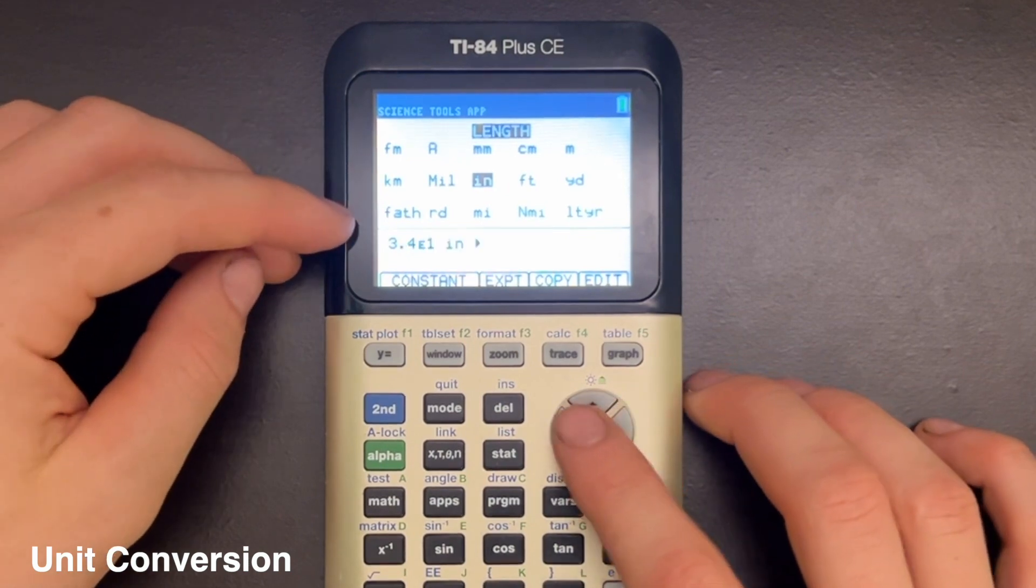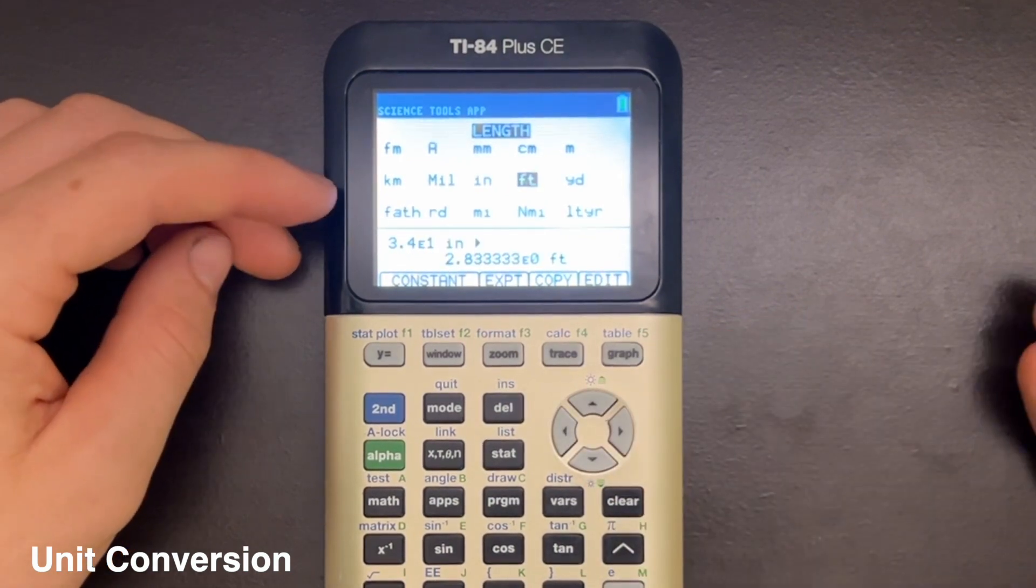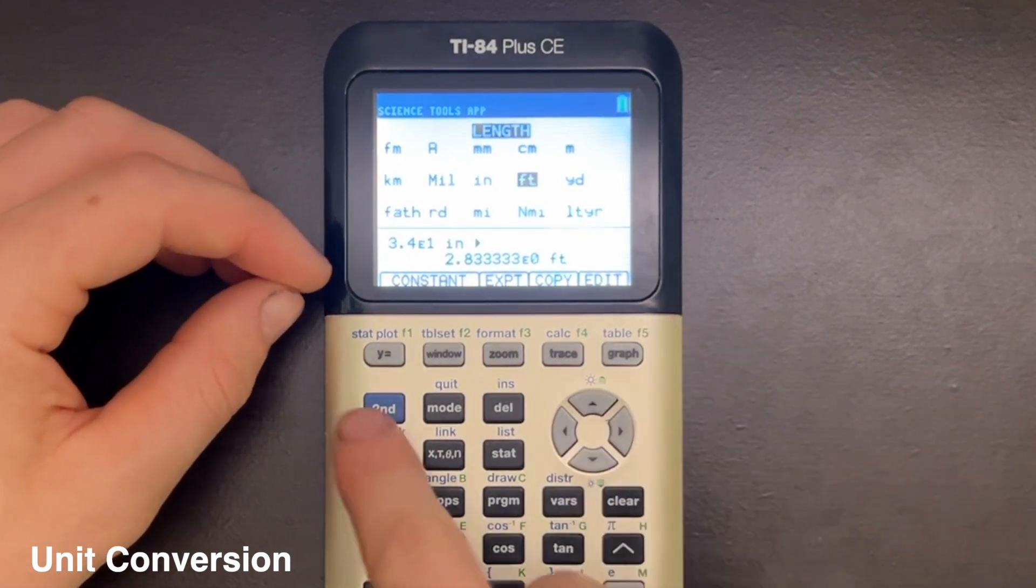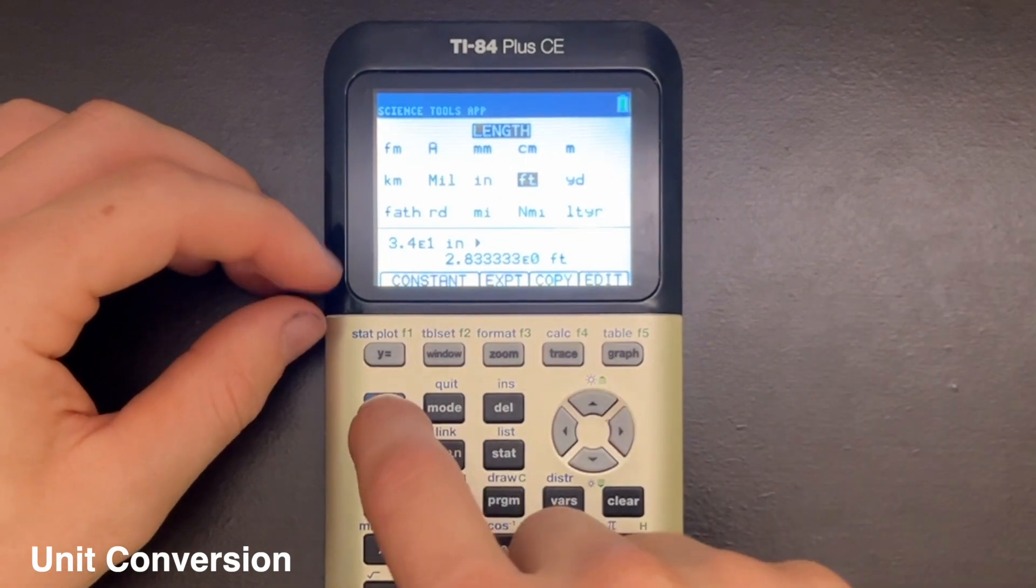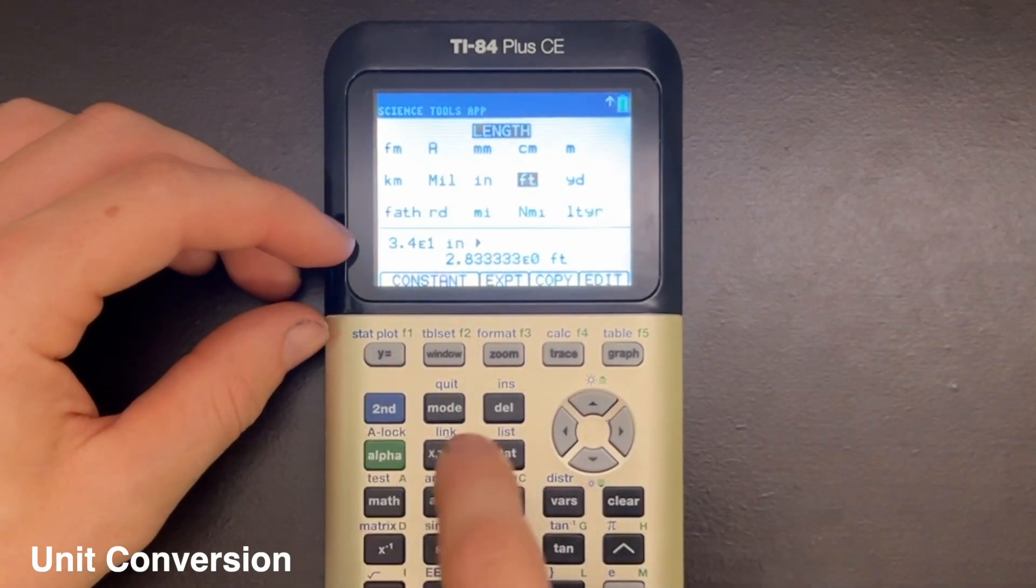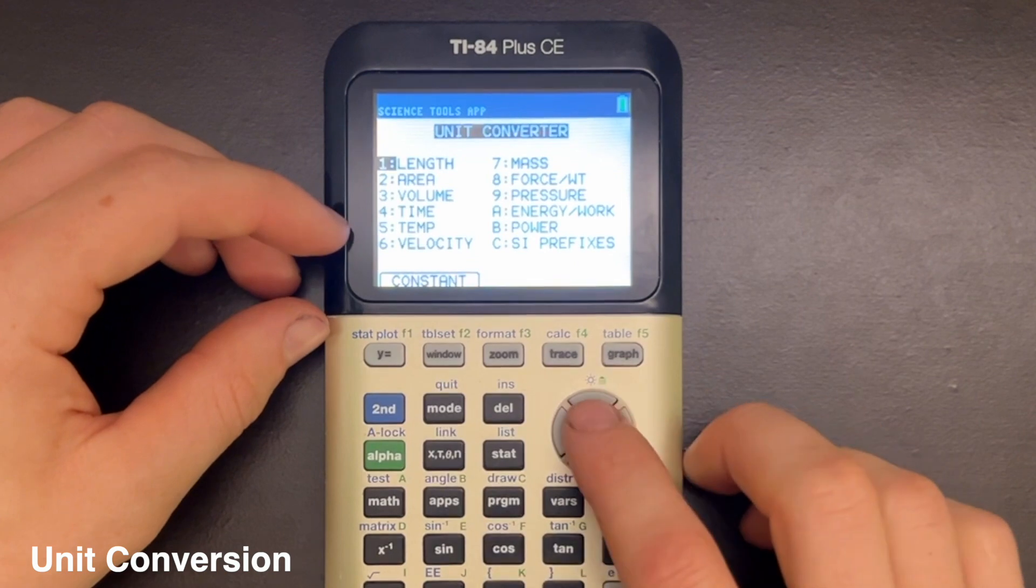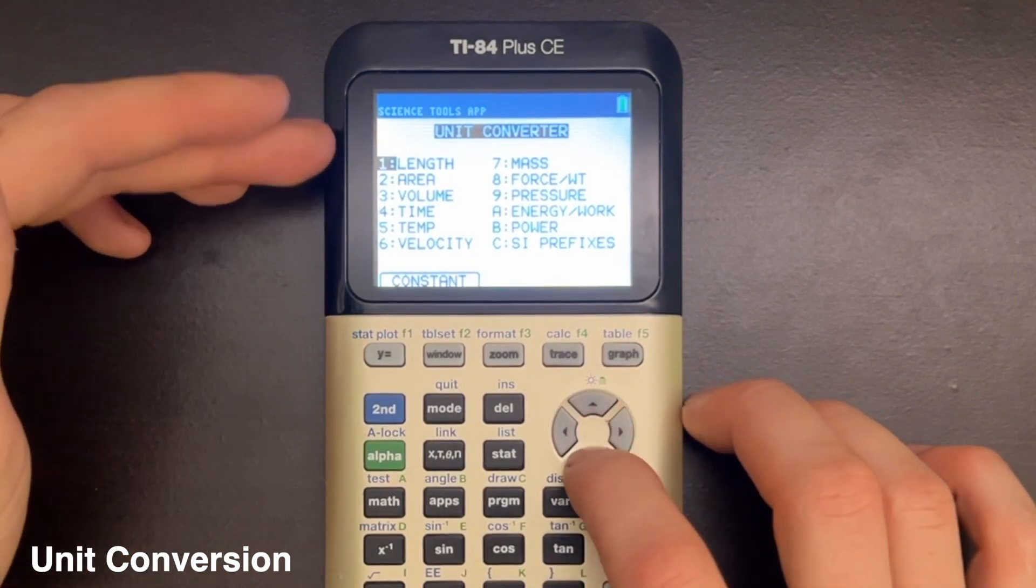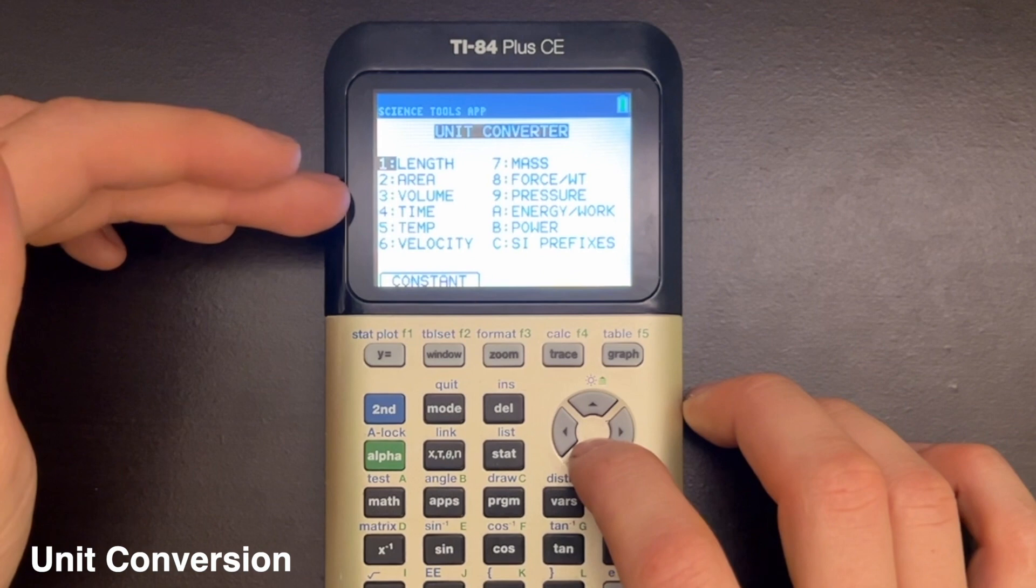Say I want 34 inches to feet, I can do that. And then to go back to the previous menu, you just press 2nd mode for quit, and that will take you back here, and you can select a different Unit Conversion to do.